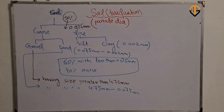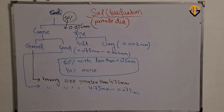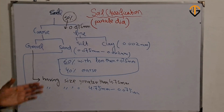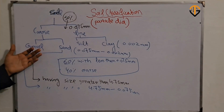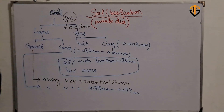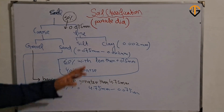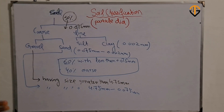Remember, soil classification is always carried out based on particle diameter. In the next video we will talk about sieve analysis and hydrometer analysis — two techniques used to determine particle sizes. We will cover how to determine gravel and sand particle sizes using sieve analysis, and silt and clay sizes using hydrometer analysis.